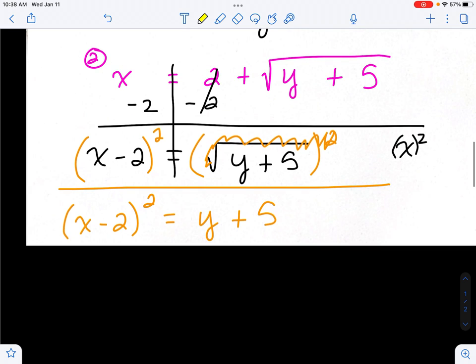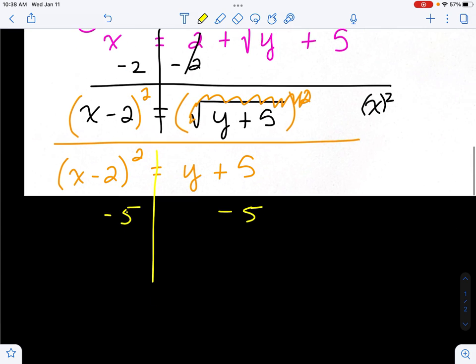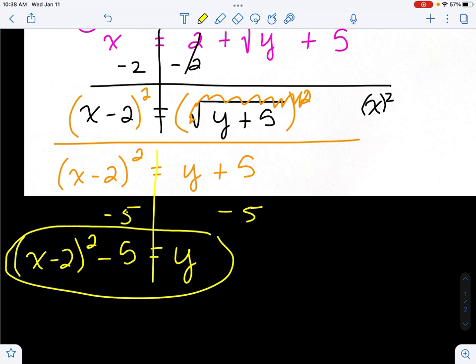We need to get y by itself, so we will subtract 5 on both sides. And when you subtract 5 on the left, you're not putting anything new in the house. The house is closed. So that minus 5 goes on the outside, and this would be our inverse equation.